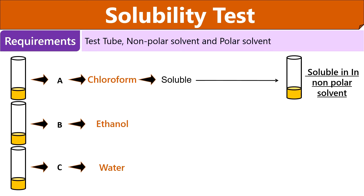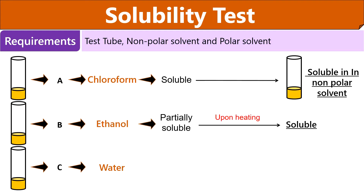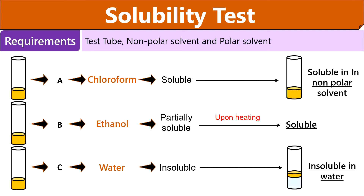If you shake test tube A, you could see a soluble mixture because lipids being hydrophobic are soluble in non-polar solvent, i.e., chloroform. If the test sample contains lipids, it forms a partially soluble mixture with ethanol, but upon heating the mixture becomes soluble. At last, lipids are insoluble in water and you could see a film of lipid on the top of the water.